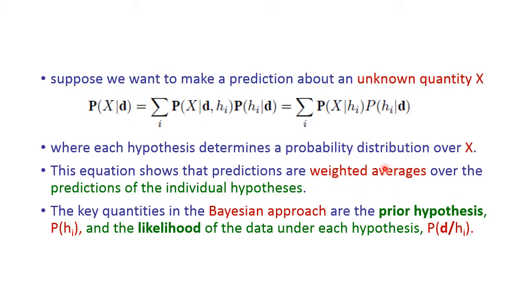This gives the weighted average over the predictions of individual hypotheses. We have five different types of bags and can randomly pick any one and take any one candy, then calculate the probability of that candy. In the Bayesian approach there are two key quantities: first is the prior hypothesis P(hi), and second is the likelihood of the data under each hypothesis, that is P(d | hi).